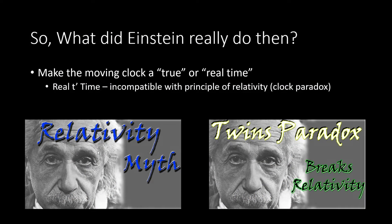From the previous relativity myth video, we learned that the only thing Einstein really did was take Lorentz's moving clock and turn it into a true or real time. And from the twins paradox video, we learned that when you take that new real moving clock and pair it with the principle of relativity, it's incompatible because it creates the famous clock paradox.